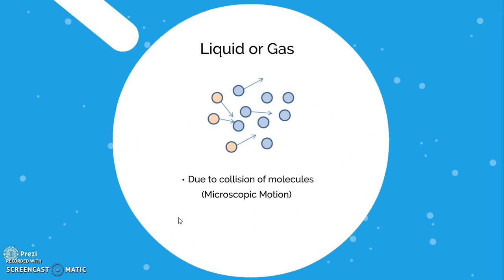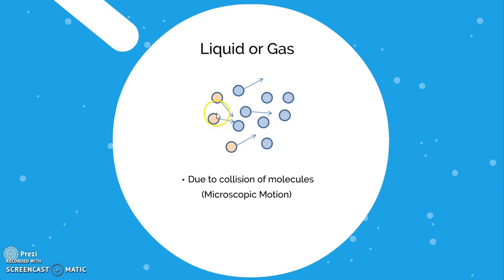Moving towards conduction in liquids or gases: in liquids and gases, intermolecular forces are weak — much smaller than in solids — so there are no strong bonds between molecules. When a set of molecules is heated and gains kinetic energy, they move and collide with neighboring molecules, transferring some energy. Those molecules then move and collide with the next, and this process continues throughout the liquid or gas.